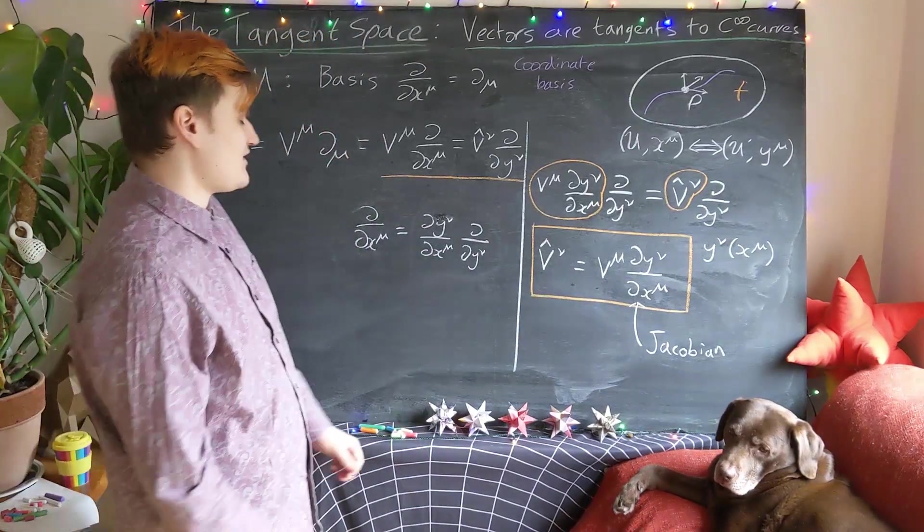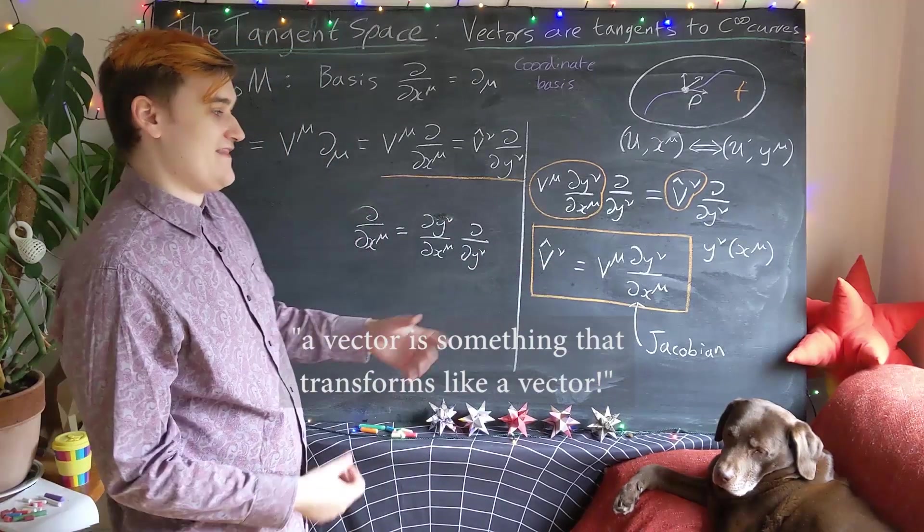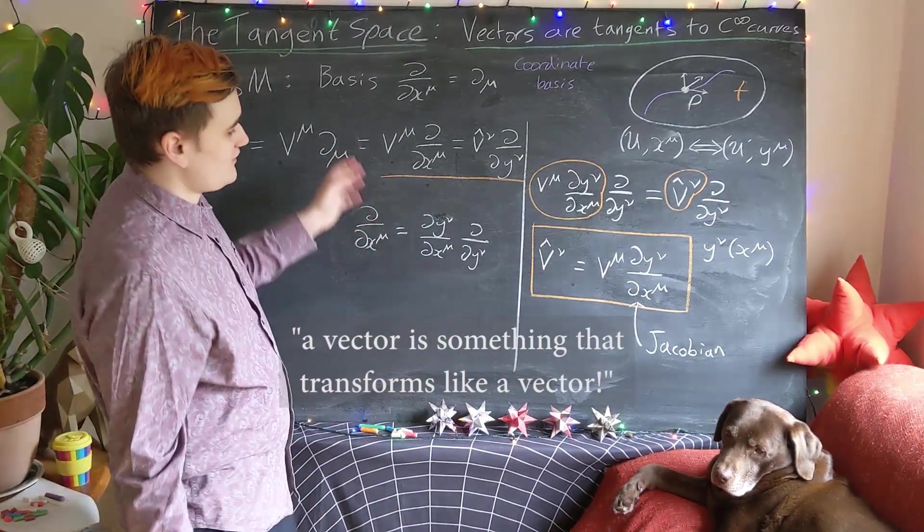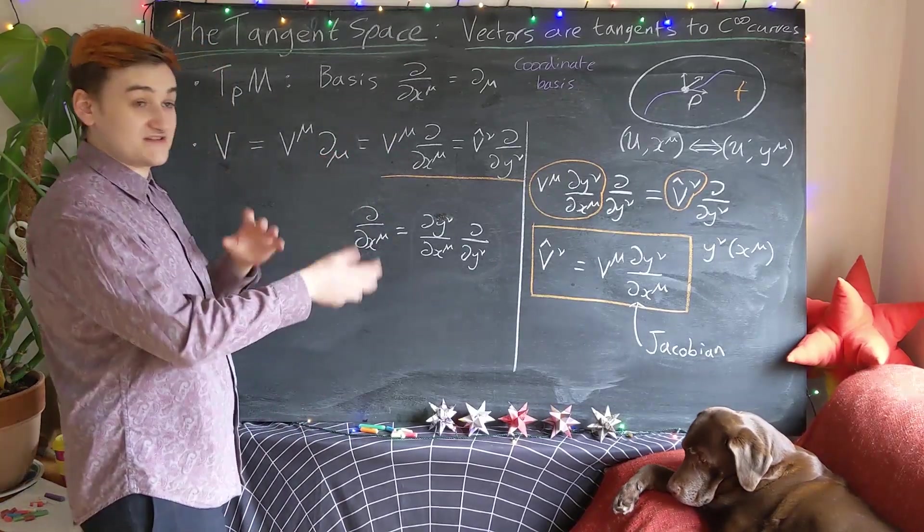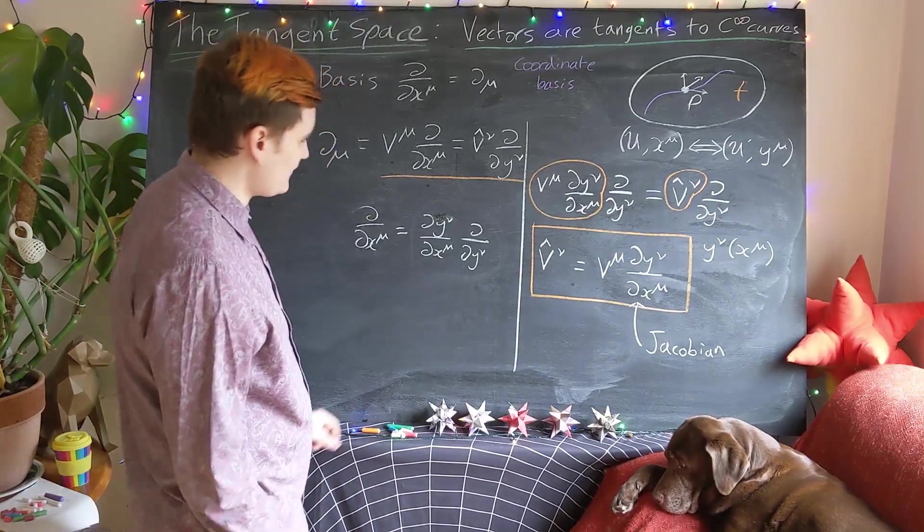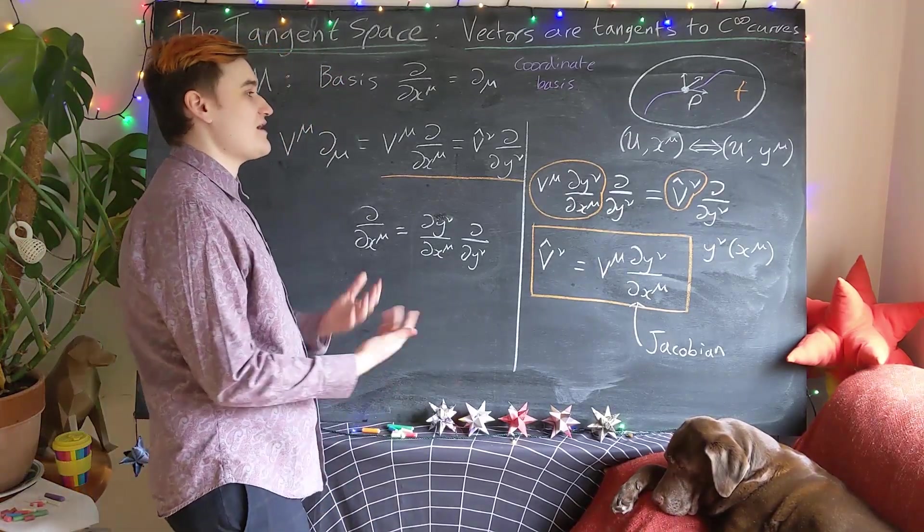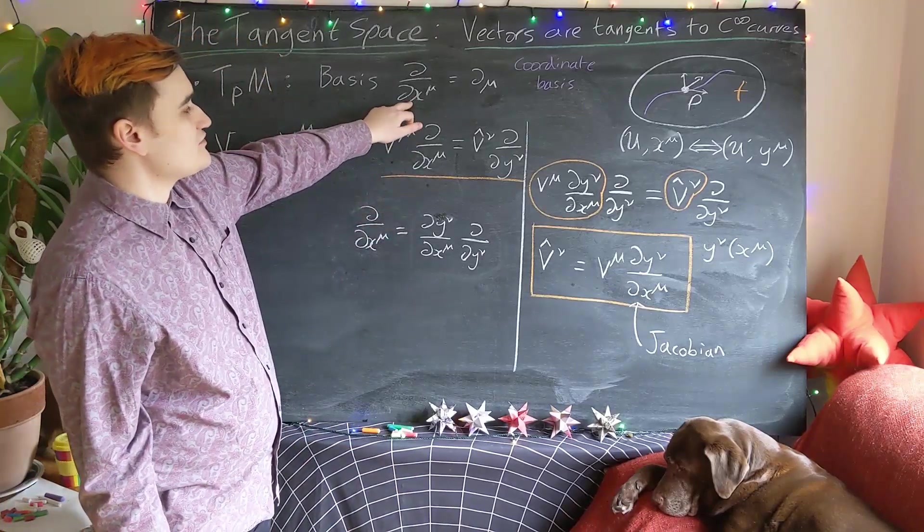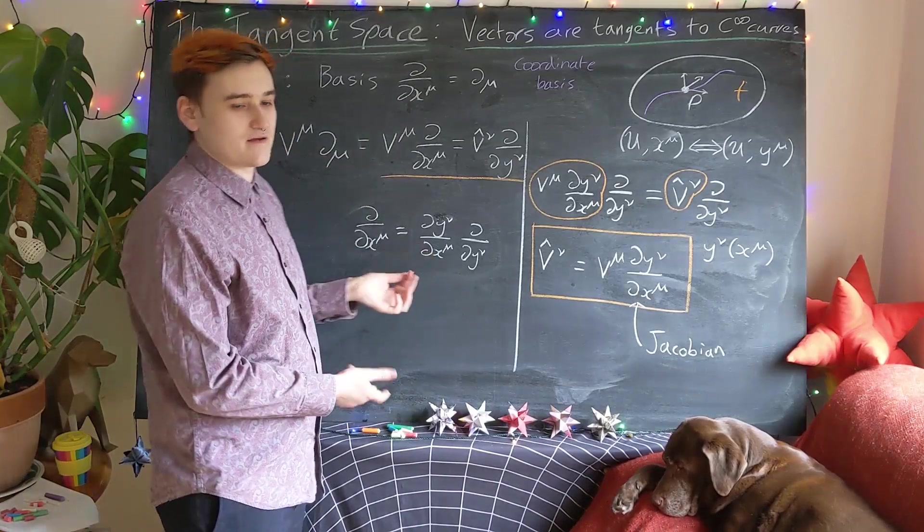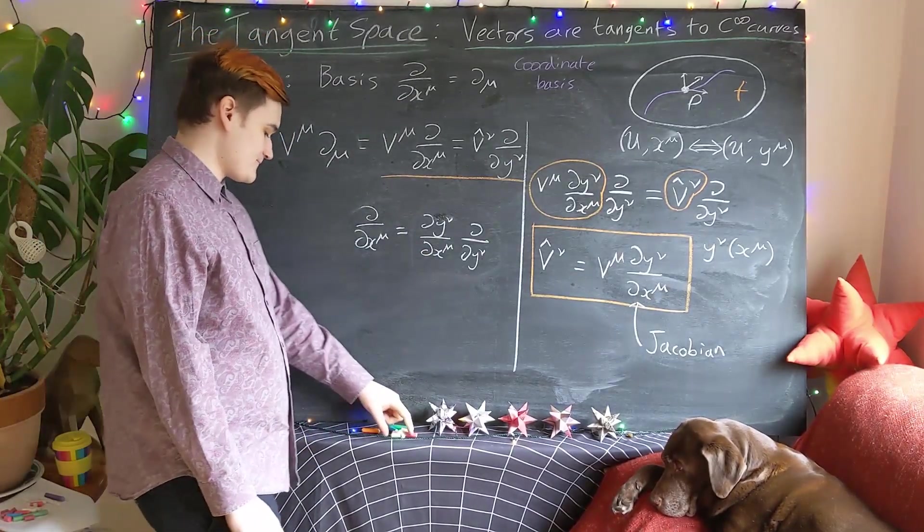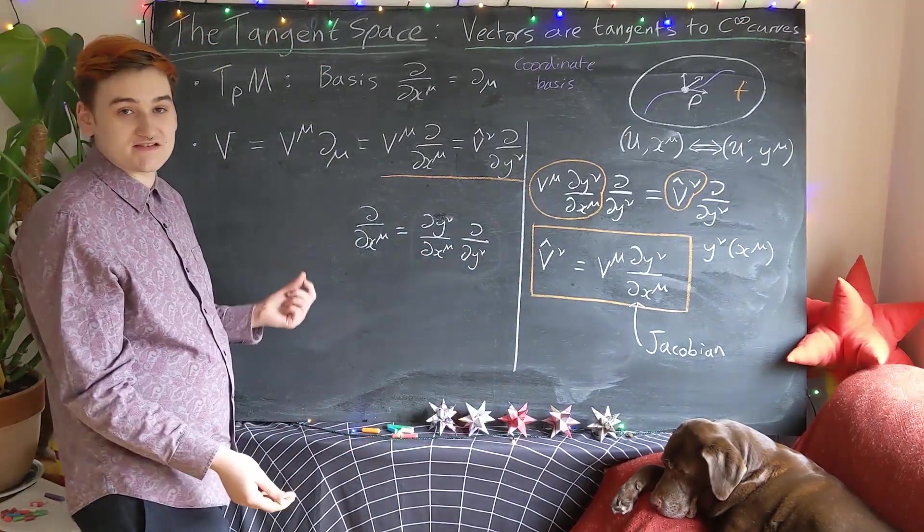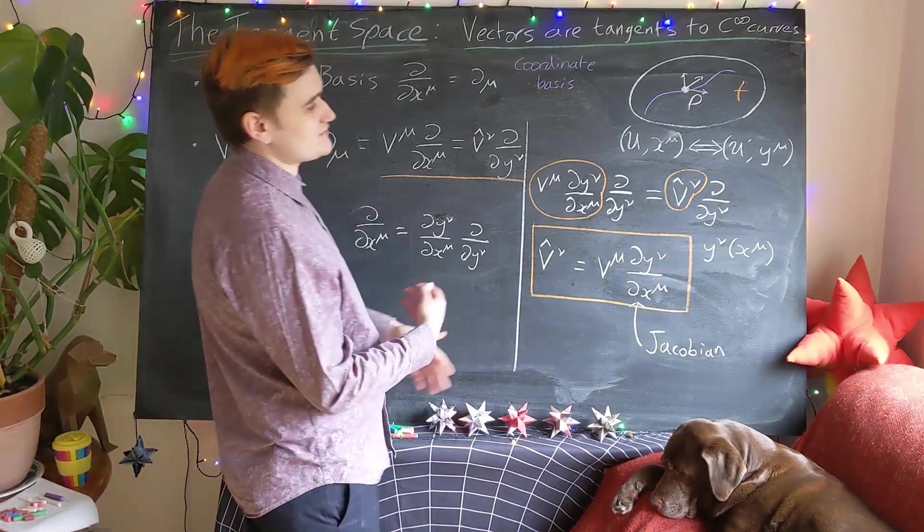When a physicist explains this to you, they'll just pull this expression out of their hat and that'll be it. Now we see exactly where this is coming from. The components of a vector are going to respond to changes in the basis vectors. And now this happens when we change coordinates because we're using the coordinate basis. Our basis vectors are inherently tied to the coordinate system we're using. So this expression is very powerful. It lets you talk about vectors in any coordinate system and easily transform between them.